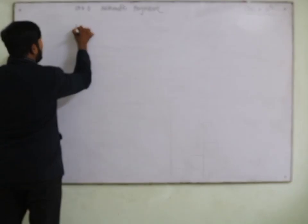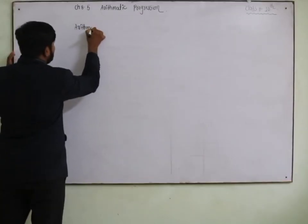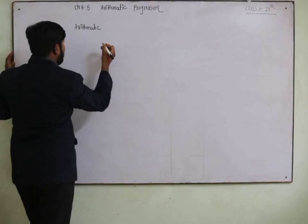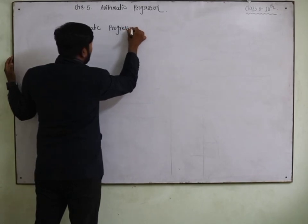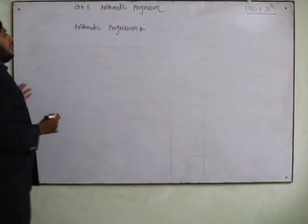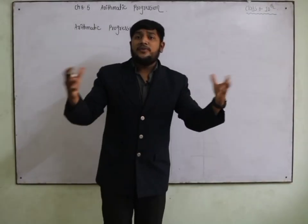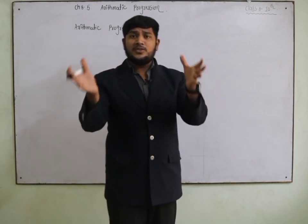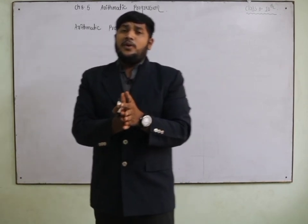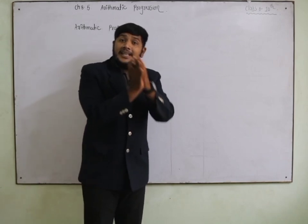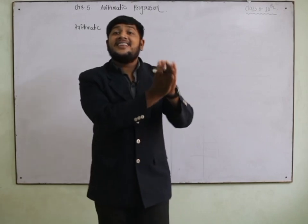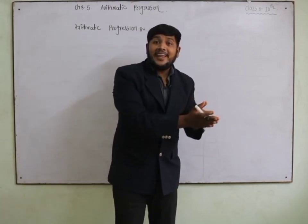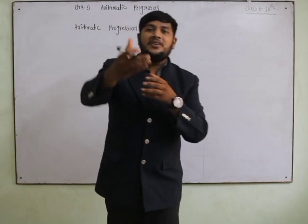So what is actually Arithmetic Progression? We will start from the definition. It is a list of numbers in which every next term is obtained by adding some fixed number to the previous one.